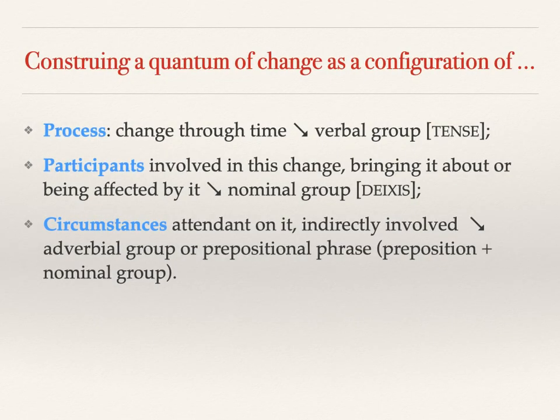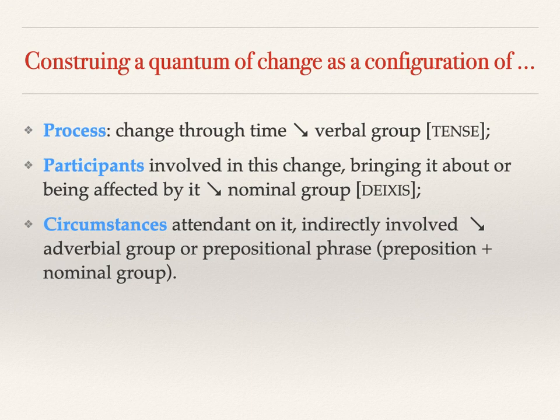This change is modeled as the configuration of process plus participants plus circumstances. The process represents change through time — it's realized by a verbal group, and in English a core system of the verbal group is tense, which allows speakers to locate the unfolding of the process through time relative to the now of speaking: past, present, future. Complementing the process, we have the participants involved in the process, bringing about or being affected by it in some way. Participants are realized by nominal groups, and one of the key systems of the nominal group is the system of DIAXIS.